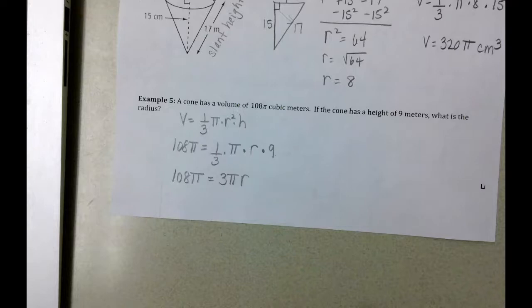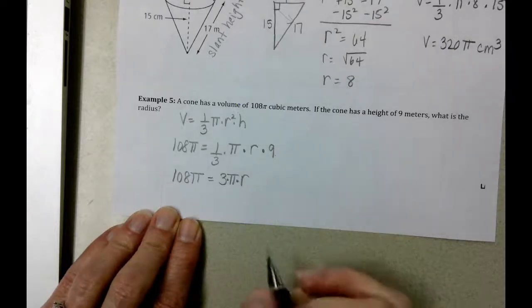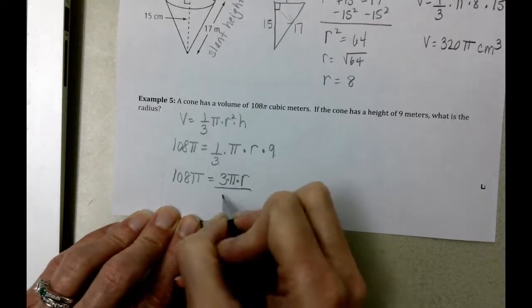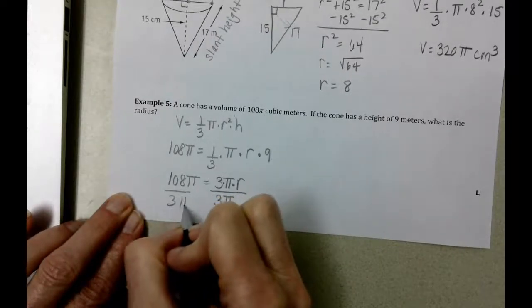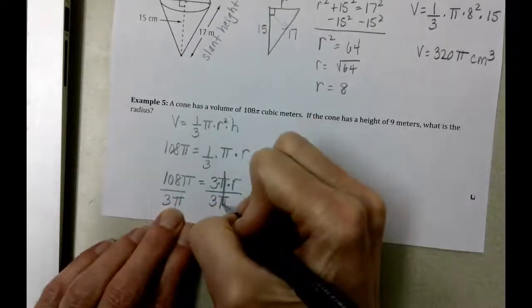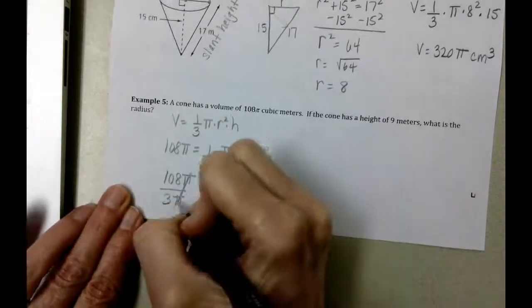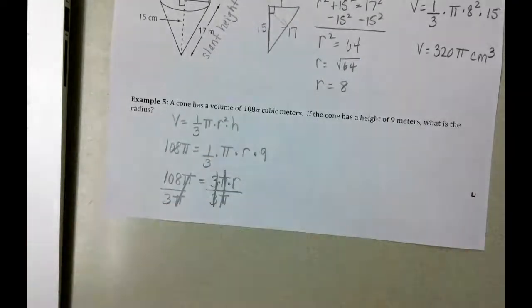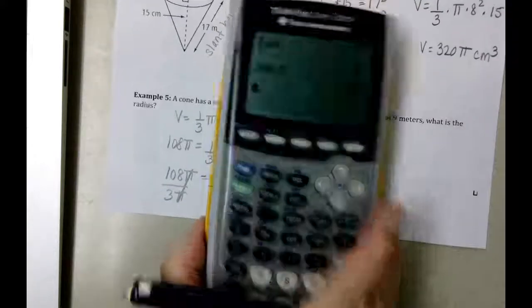Now that we know that, what we are trying to find is the radius. This is 3 times pi times r squared. So we're going to divide both sides by 3 pi. What happens is that the pi's cancel out. Pi divided by pi is 1. 3 divided by 3 is 1. When we take 108 and divide it by 3, we end up with 36.